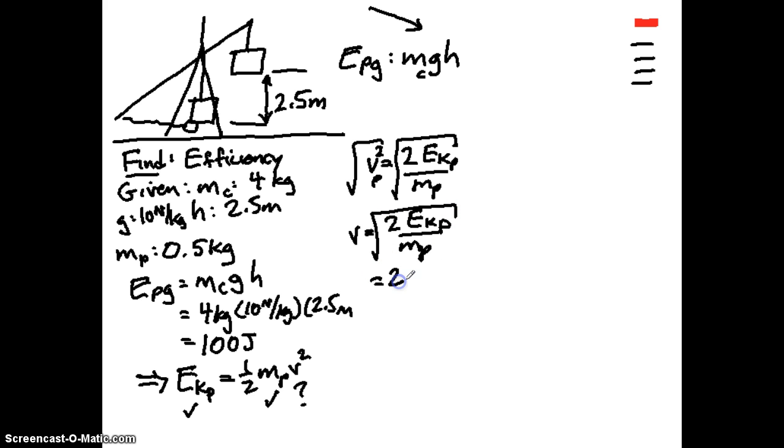So I see 2 times 100 joules from that gravitational potential energy, divided by 0.5 kilograms. Take the square root of that. I have square root of 400 meters squared per second squared, take the square root of that. So our velocity, our initial velocity is 20 meters per second.